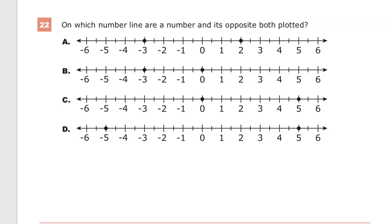This is the grade 6 math practice test for T in Ready. Question number 22. On which number line are a number and its opposite both plotted?